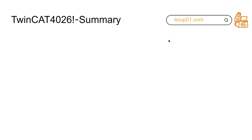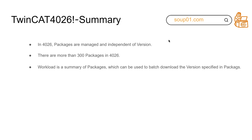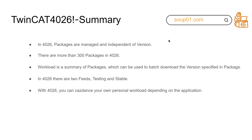Let me give a small summary for TwinCAT 4026. In 4026, packages are managed and expanded by versions. There are more than 300 packages. A workload is a summary of packages that defines which package versions to download. In 4026 there are two feeds — testing and stable — and you can also write your own custom workload depending on your application.